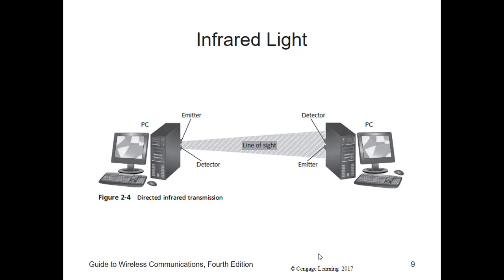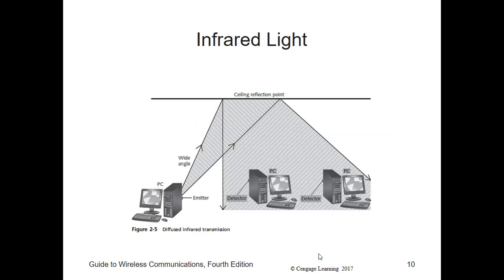A diffused transmission relies on reflected light. With diffused transmissions, emitters have a more wide-focused beam. For example, the emitter might be pointed at the ceiling of a room, which becomes the reflection point. The emitter transmits the infrared signal upward; it bounces off the ceiling, the floor, or another device, and then hits its target — the detector.